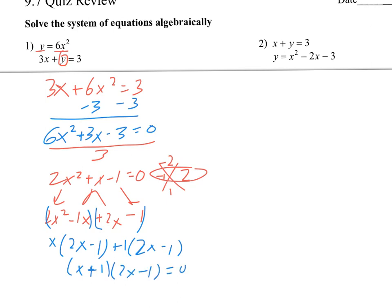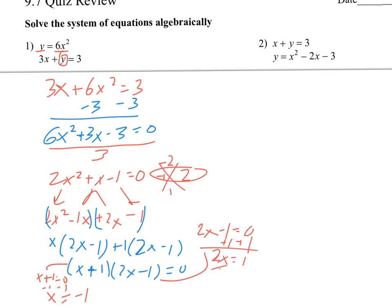So now I need to split those up and set them equal to 0 individually. x plus 1 equals 0, which means x equals negative 1. And then 2x minus 1 equals 0, so if I add the 1, 2x equals 1, and then x equals 1 half.